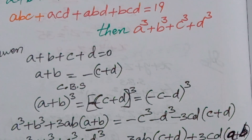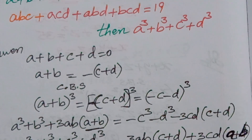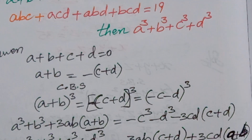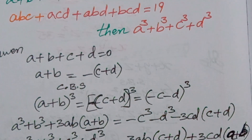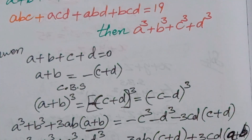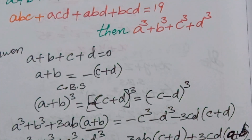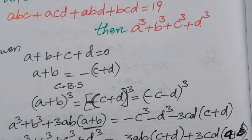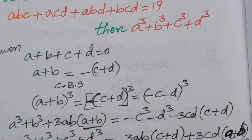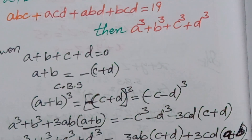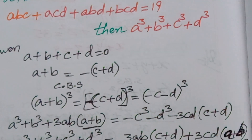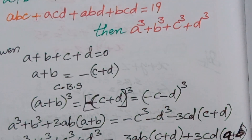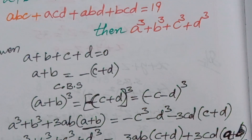In the place of (c + d), we write −(a + b). So we get terms: acd + bcd. This value is given as 19, so 3 × 19 gives 57.